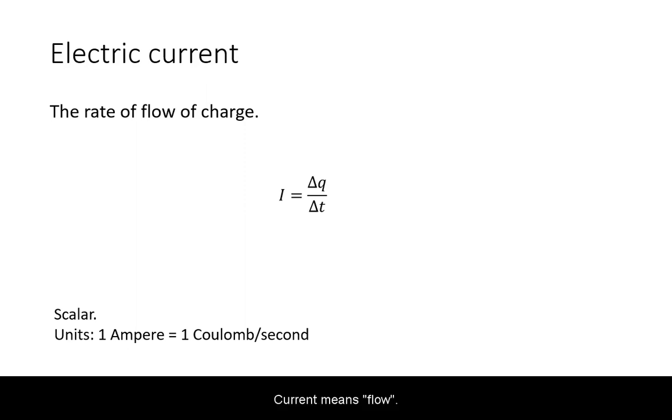Current means flow. Specifically, electric current is the rate of flow of charge over time. Current is treated as a scalar quantity with the units of ampere.